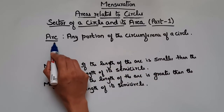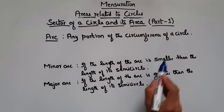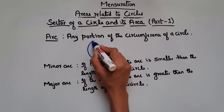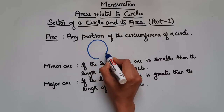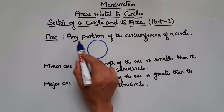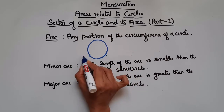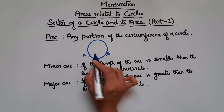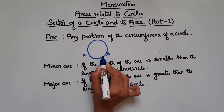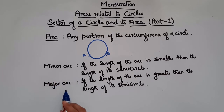What is an arc? Any portion of the circumference of the circle is called an arc. Let's draw a circle. We know this is the circumference of the circle. Let's take a portion AB. This AB is nothing but the arc. Now we have two types of arc: we have minor arc and a major arc.